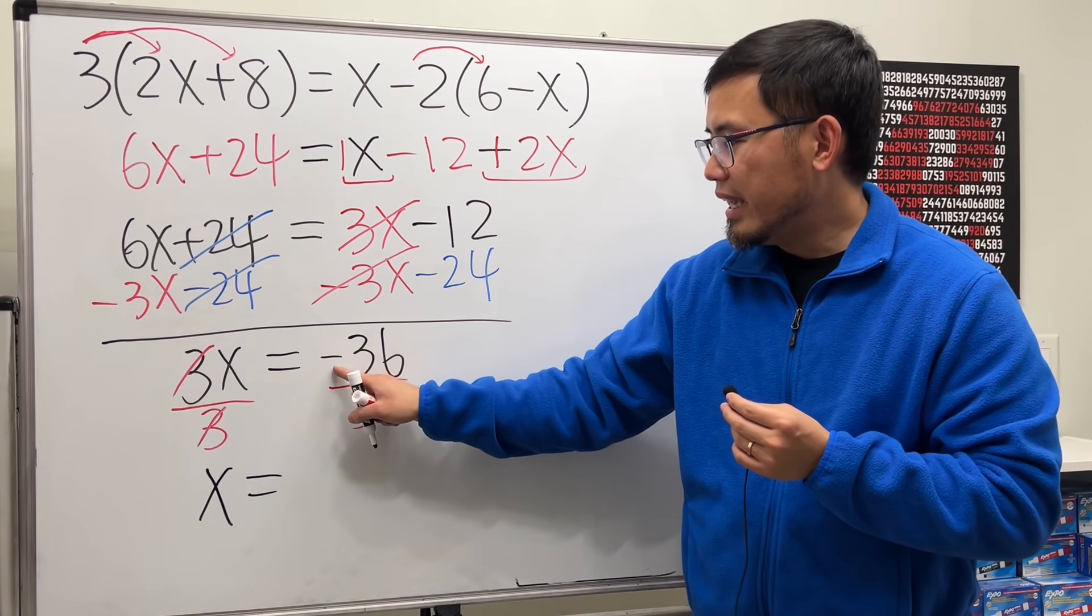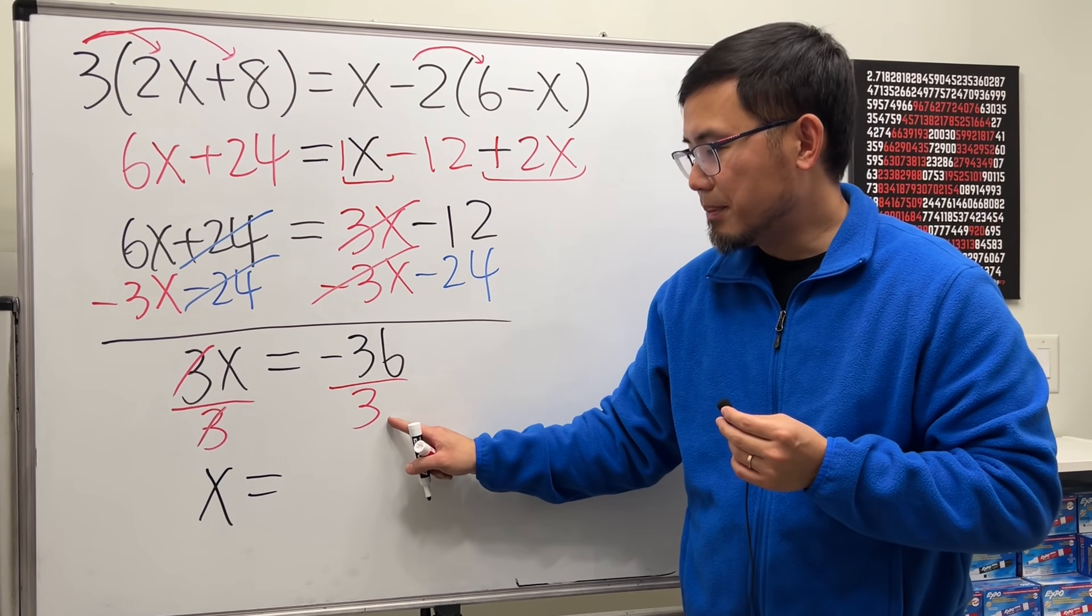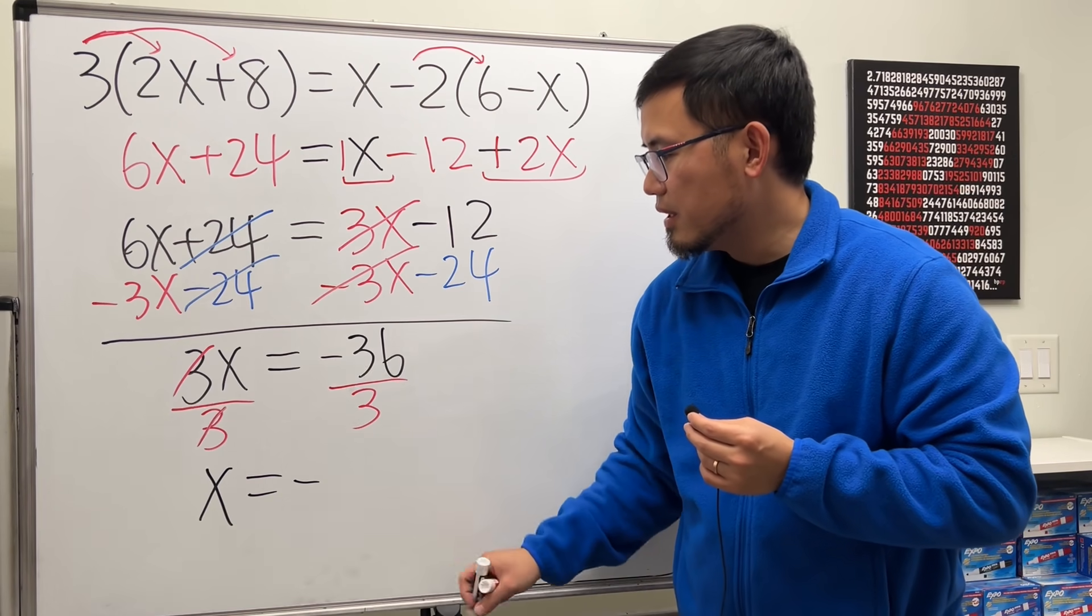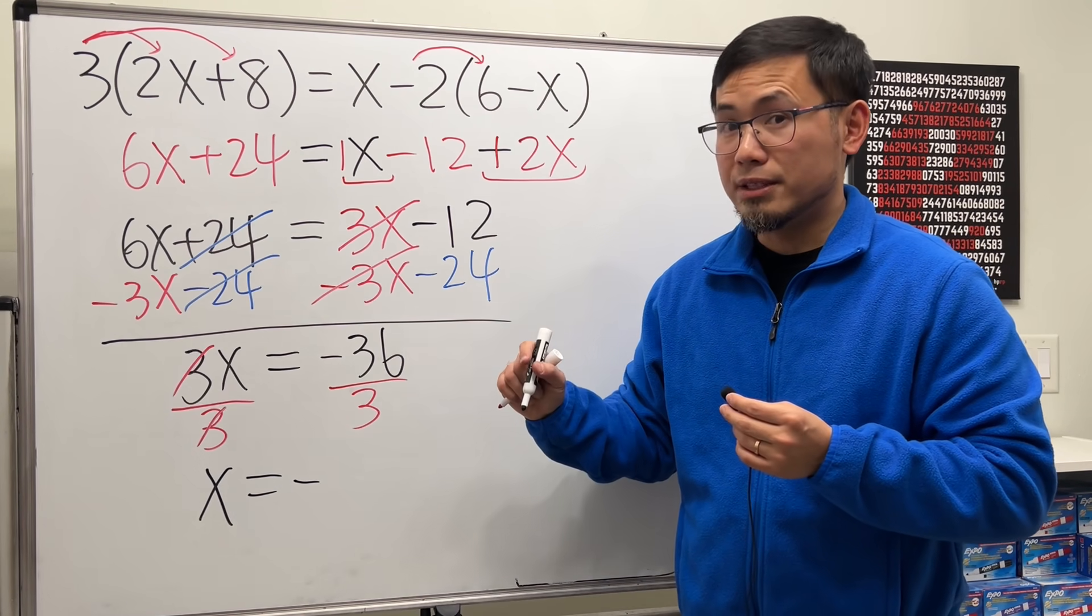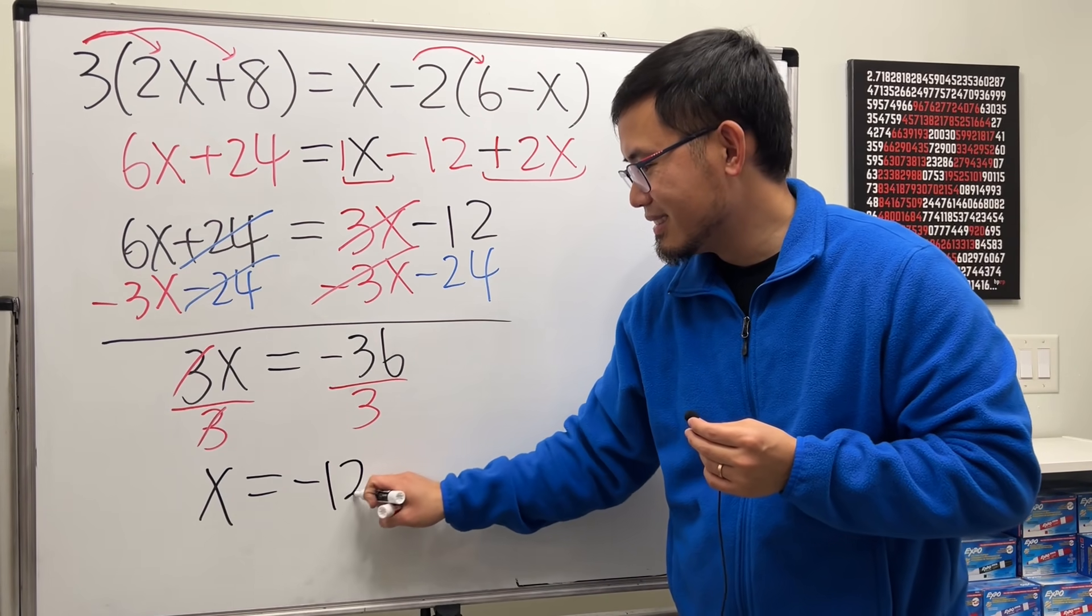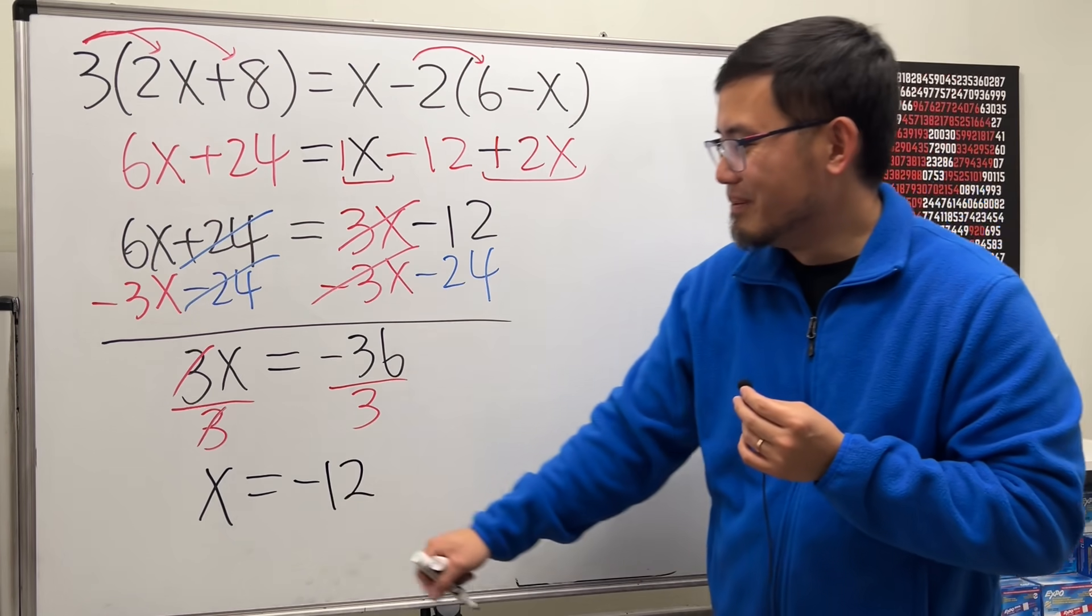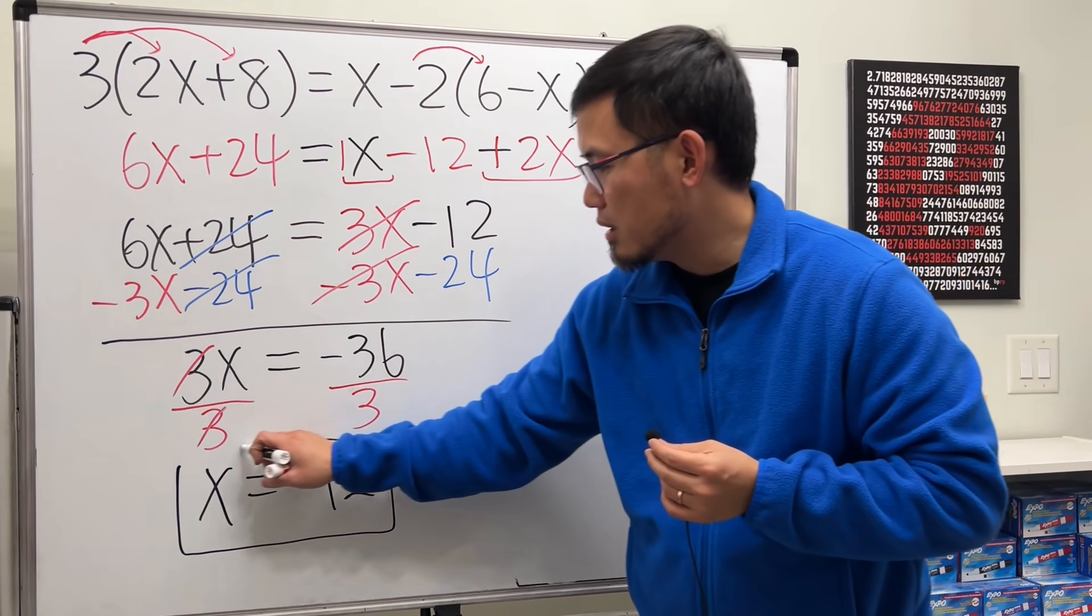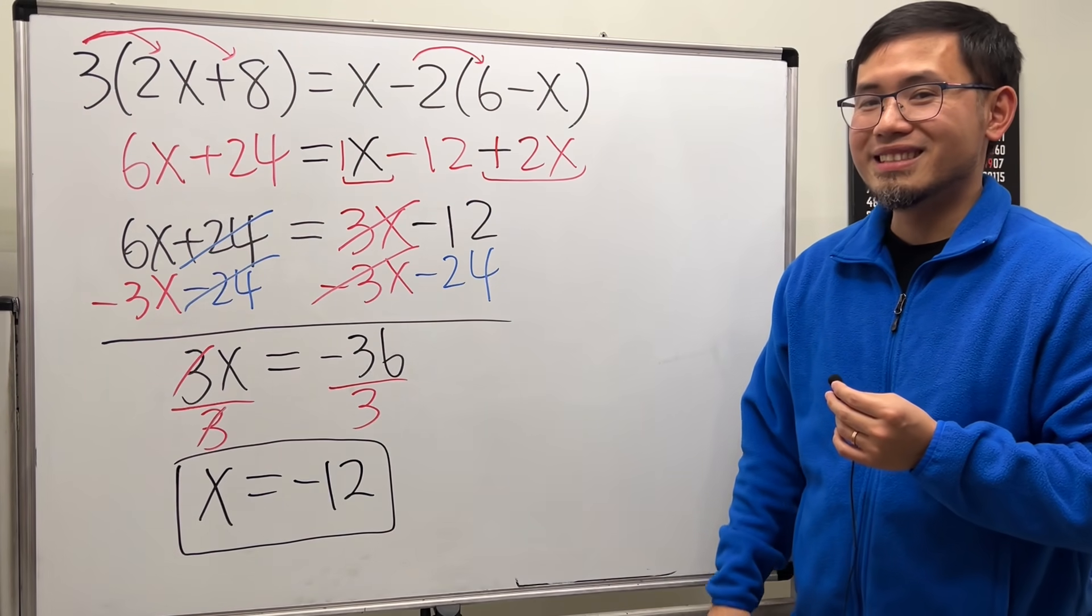Now, negative 36 divided by 3. Negative divided by positive is negative. 36 divided by 3, we get 12. And that's the answer, because we have x by itself equal to a number. However, that's exactly the solution for this.